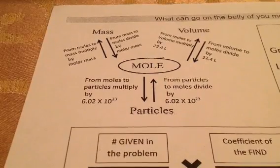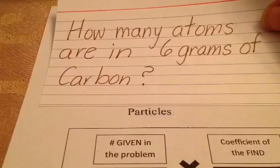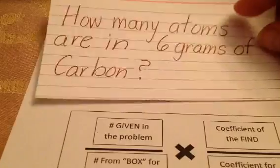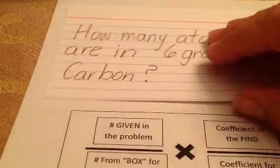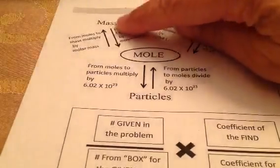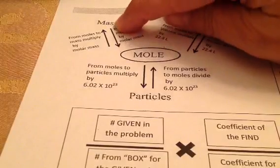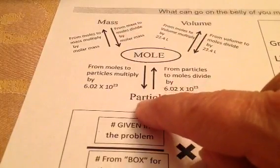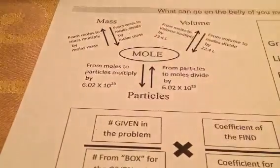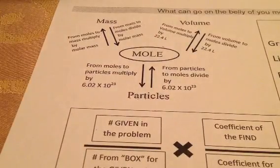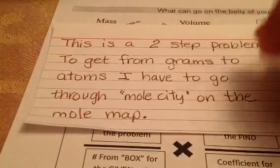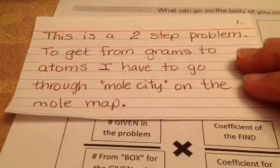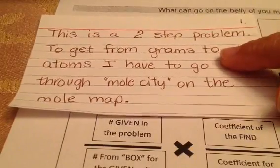This video is going to address and answer the question: how many atoms are in 6 grams of carbon? I'm starting at 6 grams, and it's asking me how many atoms. Atoms is way down here. The only way I can get from mass to atoms is to do a two-step problem — to get from grams to atoms.